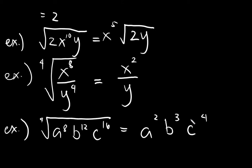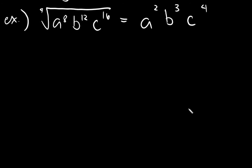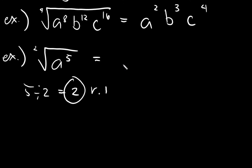And lastly, what if you would have a given like this: the square root of a raised to 5. Of course you cannot divide this one. 5 divided by 2 is not even. But the thing about this one is you will divide still. 5 divided by 2, the answer is 2, and you will have a remainder 1. The 2 will be the new exponent.